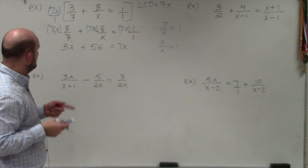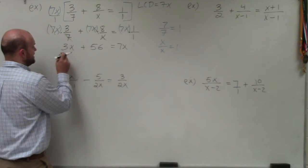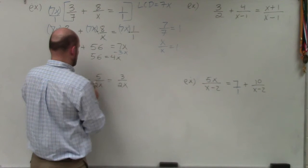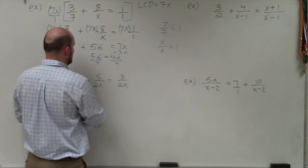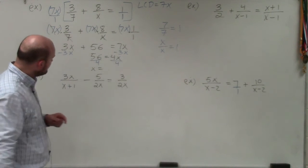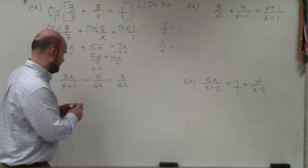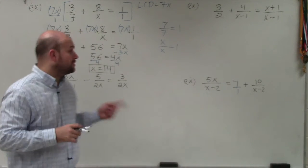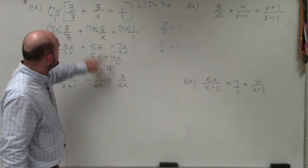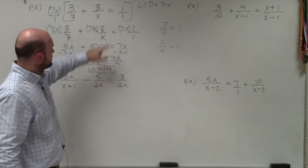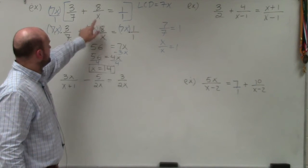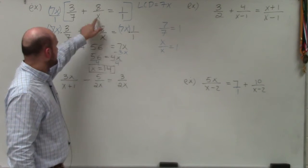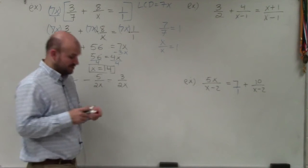To solve this, I basically want to get my variables on the same side. So I subtract 3x on both sides and get 56 equals 4x. Then I divide by 4 on both sides, and x equals 14. Whenever you're solving a rational equation, always plug your solution back into your original equation to make sure it doesn't make any denominator equal to 0. Plugging in 14 for x does not make the denominator 0, so that works.